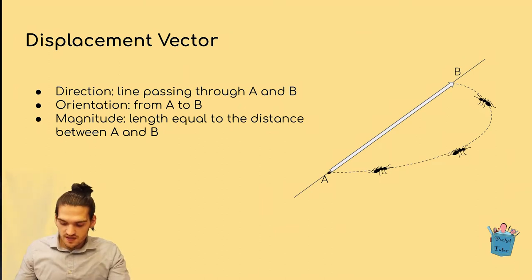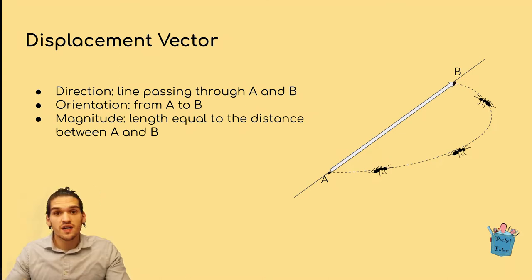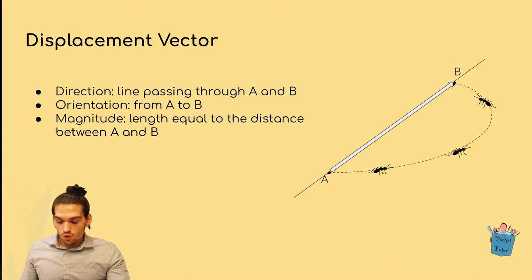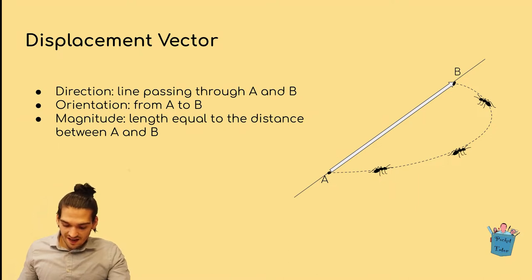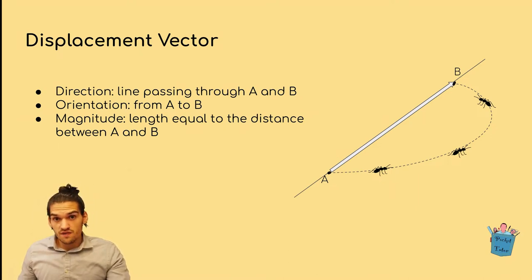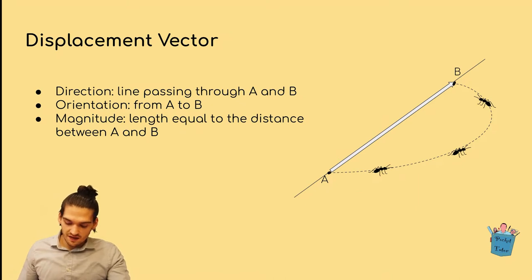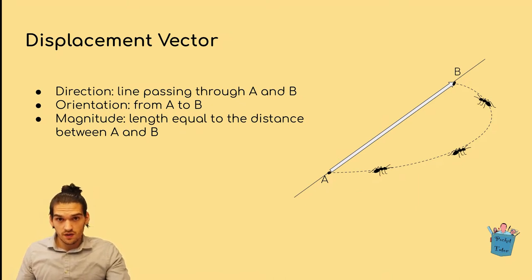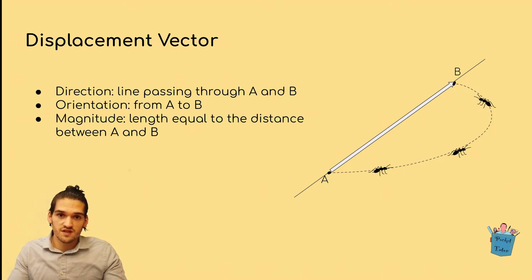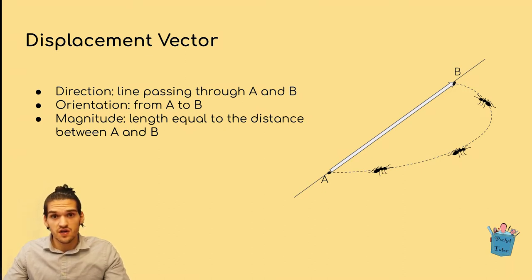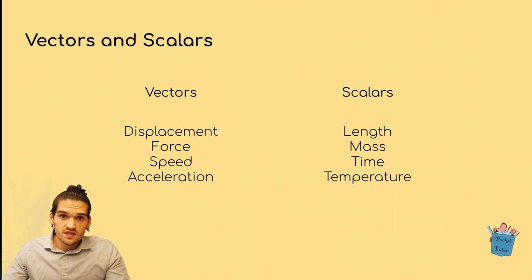Talking about displacement: here in this picture we see an entity moving from point A to point B. It doesn't matter the route it takes; what matters is the starting point and the end point. The direction is given by the line passing through A and B, and the orientation is given by the line going from A to B — not B to A — because the displacement vector describes the movement from the starting point to the end point. The magnitude is given by the distance between point A and point B.